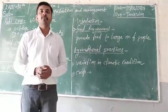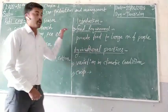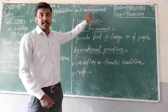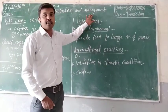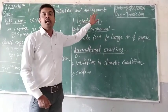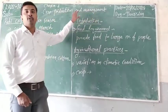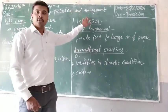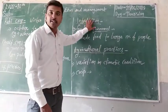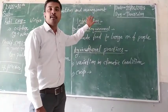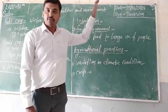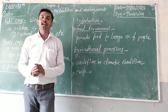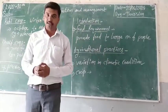We are starting our first chapter from Production and Management. In this chapter we are studying about crop production, management, how we can do different types of costs. These different things we are studying in this chapter.